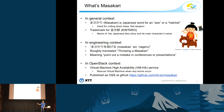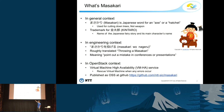And finally, in OpenStack context, we are using Masakari for Virtual Machine High Availability System that NTT develops. It rescues virtual machines when any error occurs, and it's published as OSS on GitHub. This is the URL of the GitHub. You don't need to take a photo here because we have a marketplace booth just behind you, so after this presentation you can visit our booth.